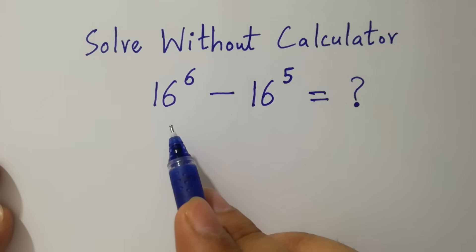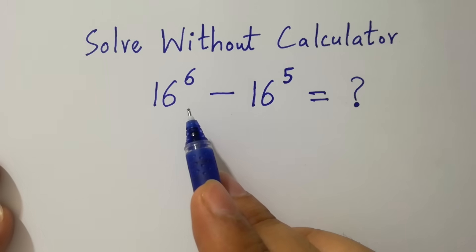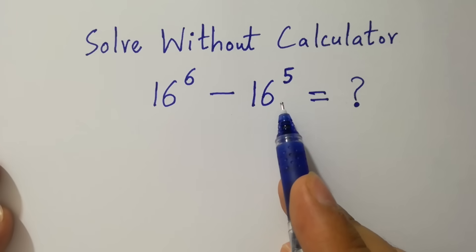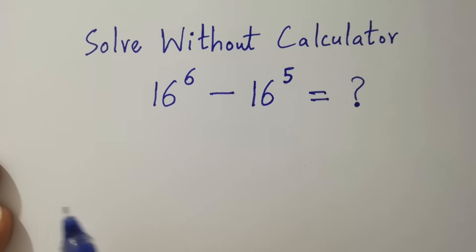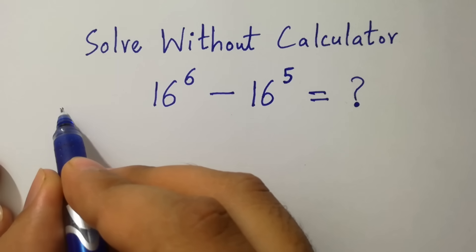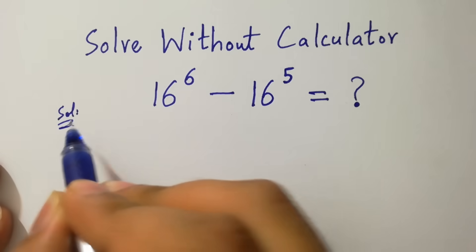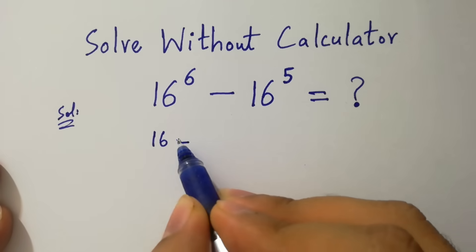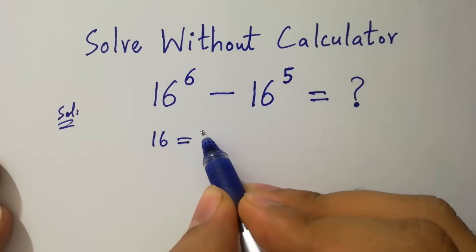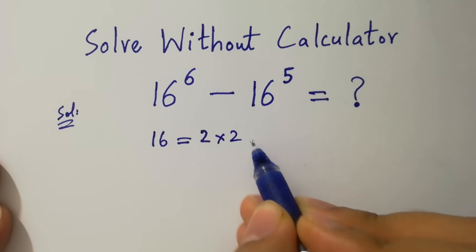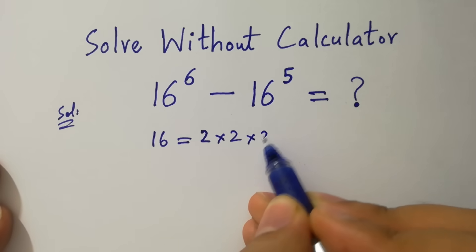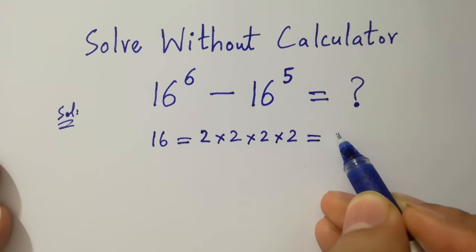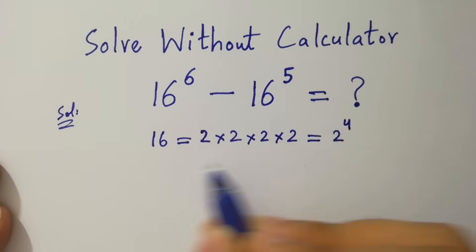Hello friends. 16 to the power 6 minus 16 to the power 5 equals what? Let's find a solution. Since 16 equals 2 times 2 is 4, 4 times 2 is 8, 8 times 2 is 16, so 16 equals 2 to the power 4.